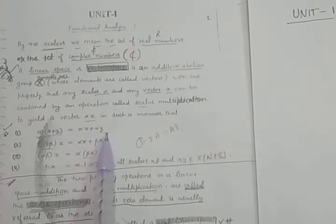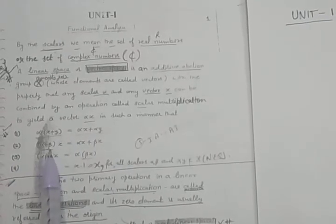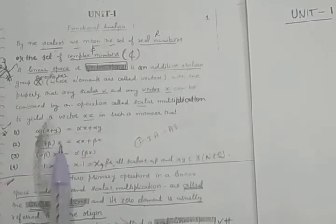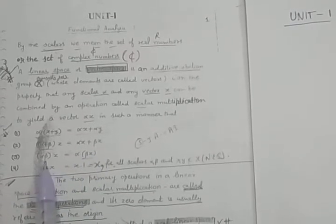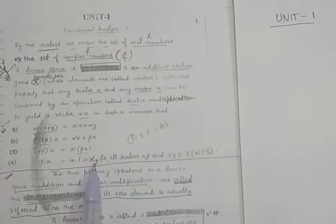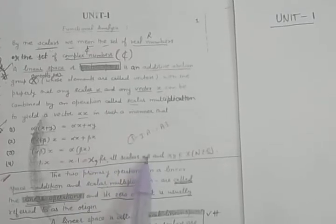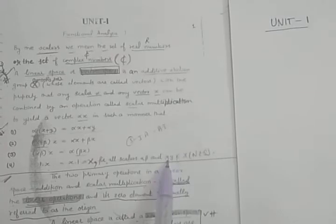This scalar multiplication satisfies four properties. First: alpha(X + Y) = alphaX + alphaY. Second: (alpha + beta)X = alphaX + betaX. Third: (alpha·beta)X = alpha(betaX). Fourth: 1·X = X, for all scalars alpha, beta and vectors X, Y belonging to the linear space.